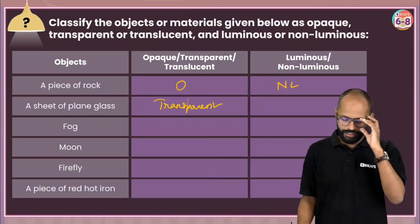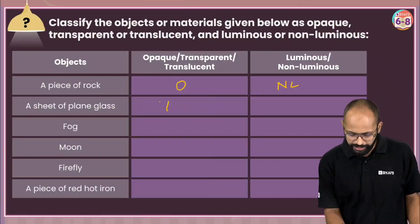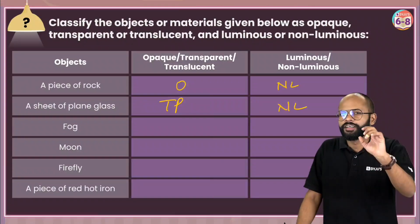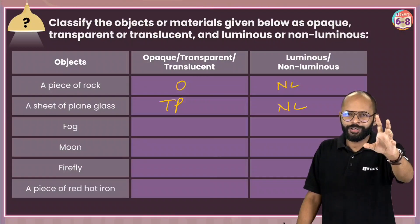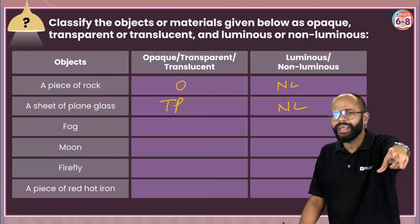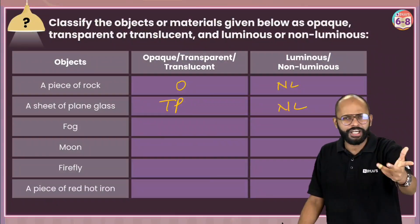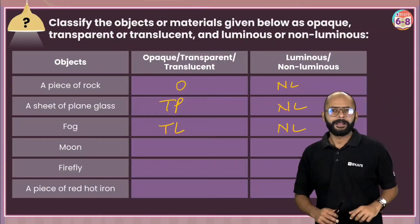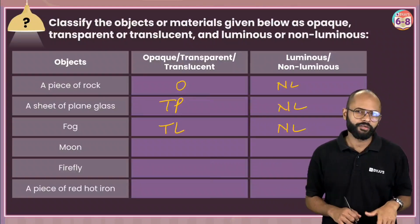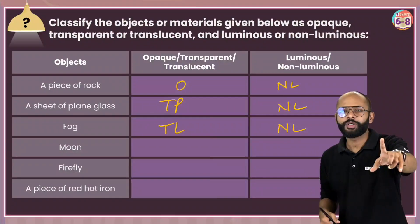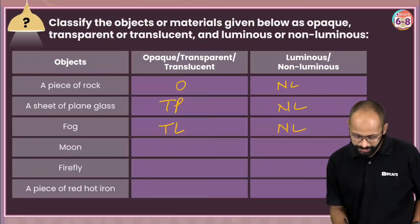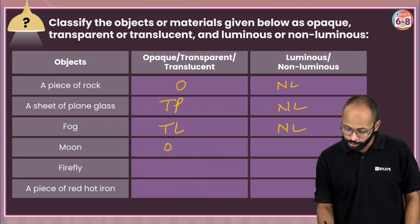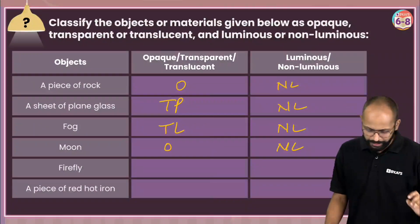Fog — can you see through fog? You can, but not very clearly. In winter, you can see cars through fog but they appear blurry. So fog is translucent. Is it luminous or non-luminous? Non-luminous. Moon — the moon is opaque. You see the moon because it reflects light from the sun. Is the moon luminous or non-luminous? Non-luminous — very important, very common question.